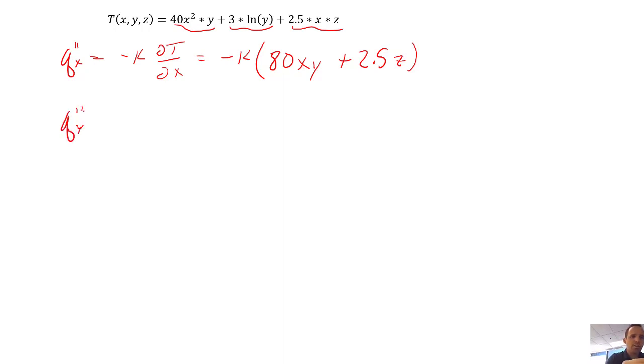Our y component, we do the same thing, but with respect to y, so here we have minus k times the derivative of this first term with respect to y is just 40x². The second term is 3 over y. The derivative of the natural log of y is 1 over y, and then we carry the 3 through. And then this last term is not a function of y, so it has no y component from that last term.